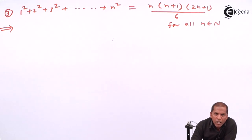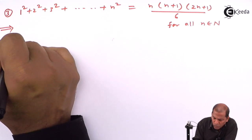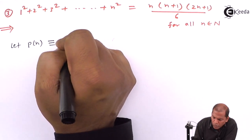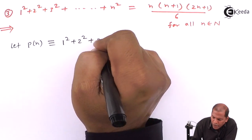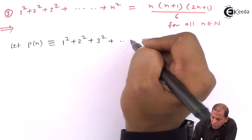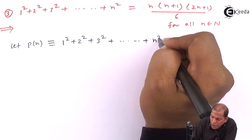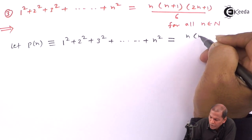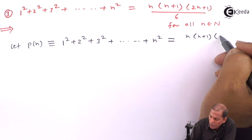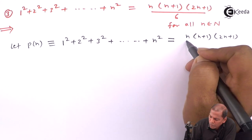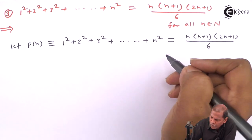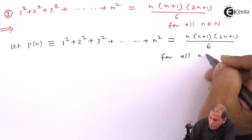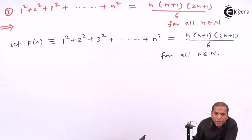Now let's see the solution. Let P(n) denote 1 square plus 2 square plus 3 square plus dot dot plus n square, equal to n(n+1)(2n+1) divided by 6, for all n belonging to the set of natural numbers.